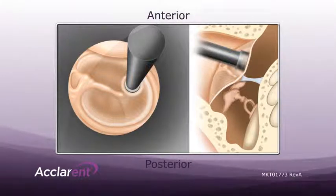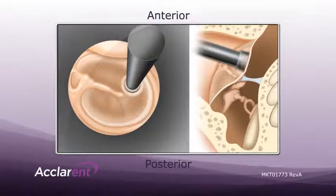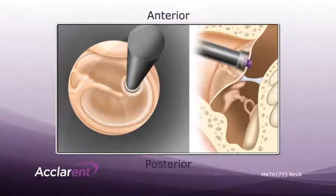To insert the tympanostomy tube, gently press the button while keeping the tip of the device immobile. The device will create a myringotomy and insert a preloaded tympanostomy tube in less than half a second.